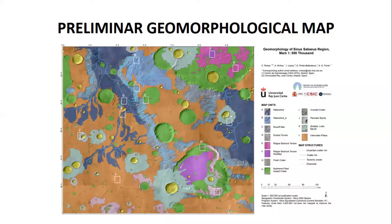We define two different units. Most of the surface is covered by inter-graded plane units, letter L, in orange color. There are some areas of the map identified as eroded terrain units, letter D, in pink, which appear especially eroded.